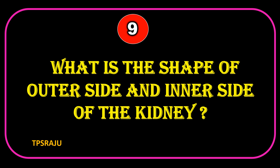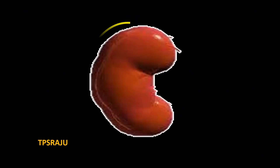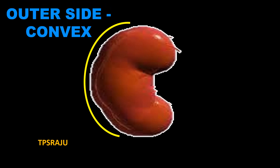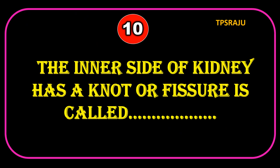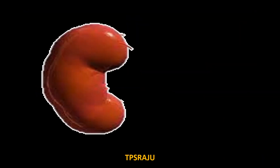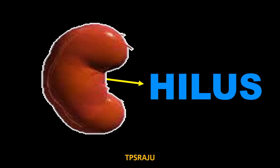What is the shape of the outer side and inner side of the kidney? Outer side: convex shape. Inner side: concave shape. The inner side of the kidney has a knot or fissure called the Hilus.